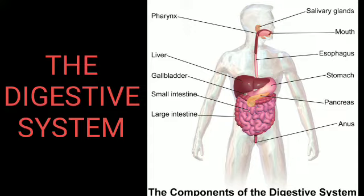Each organ of the digestive system systematically performs the function of digestion. Enzymes are catalyst chemicals produced in the body to bring about specific chemical reactions. Digestive enzymes bring about metabolic processes. Enzymes are active at normal body temperature. Digestion of food starts with the help of salivary amylase in the mouth. Food is chewed with the help of teeth and tasted with the tongue. After chewing and mixing with saliva, it is gulped.